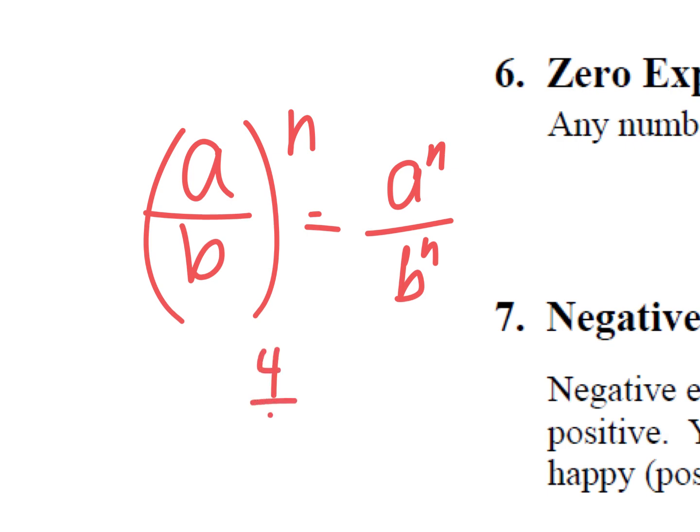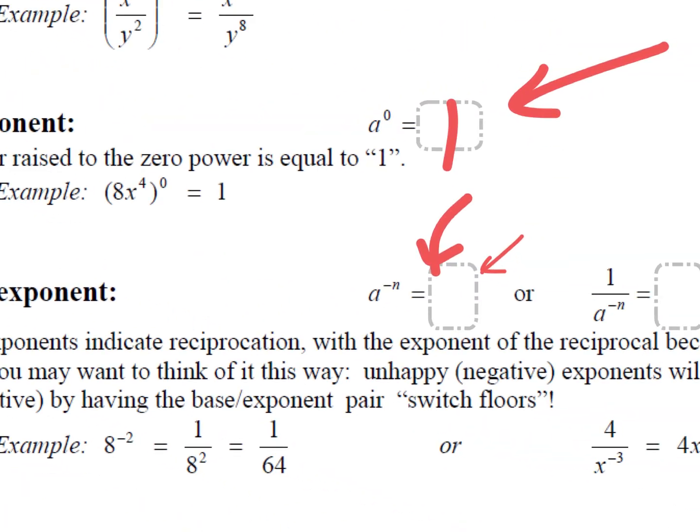When that happens, each of them gets put to the power. So like if I had four fifths and I squared it, they each get squared. Like sixteen and twenty-five. Does that make sense to you? All right, good.